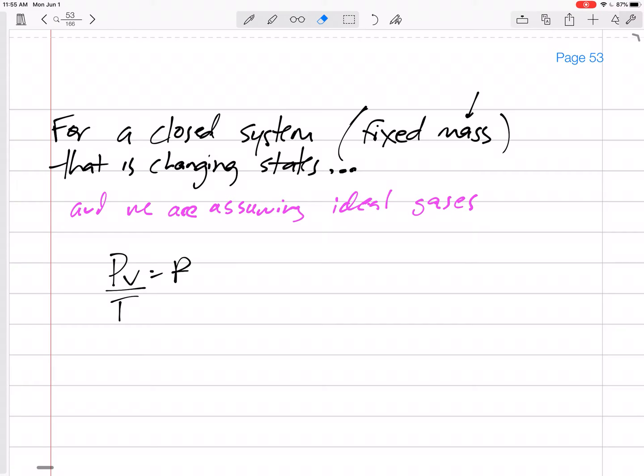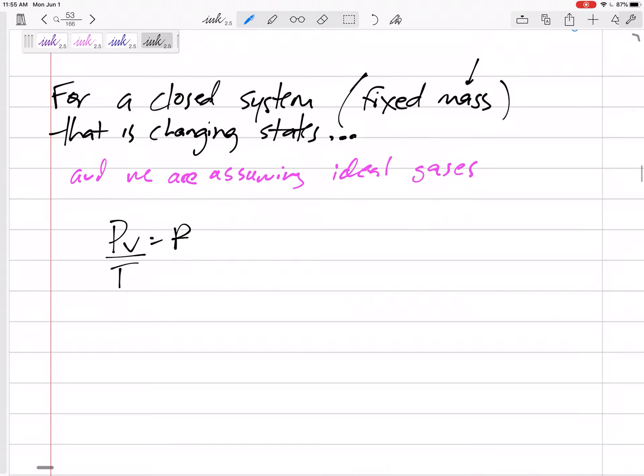It is changing states and we are assuming ideal gases. And we're assuming ideal gas PV is equal to RT. And if we divide through by T, this is equal to R.